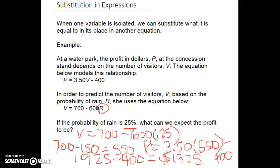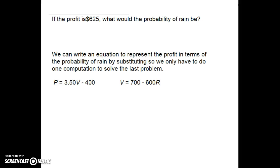Now if we start with a different question: what if we start with the profit? So now we are told the profit is $625. What is our chance of rain? So I'm going to fill in 625 as my profit and I'm going to take 3.5 times the number of visitors minus 400 and I need to solve this equation.